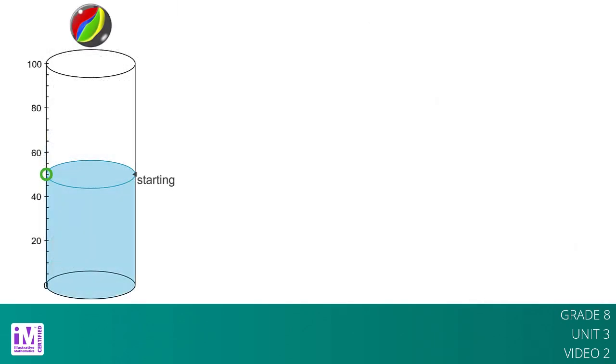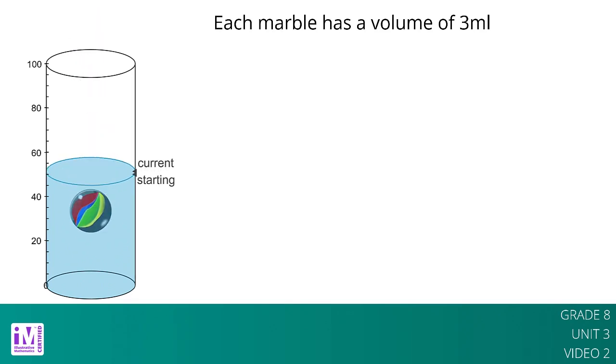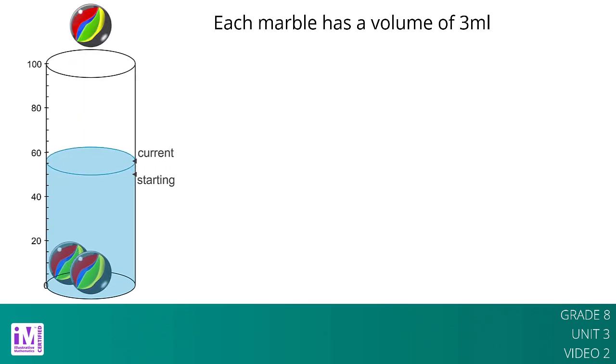Let's say we have a glass cylinder filled with 50 milliliters of water and a bunch of marbles that are 3 milliliters in volume. If we drop marbles into the cylinder one at a time, we can watch the height of the water increase by the same amount, 3 milliliters, for each one added. This constant rate of change means there is a linear relationship between the number of marbles and the height of the water.